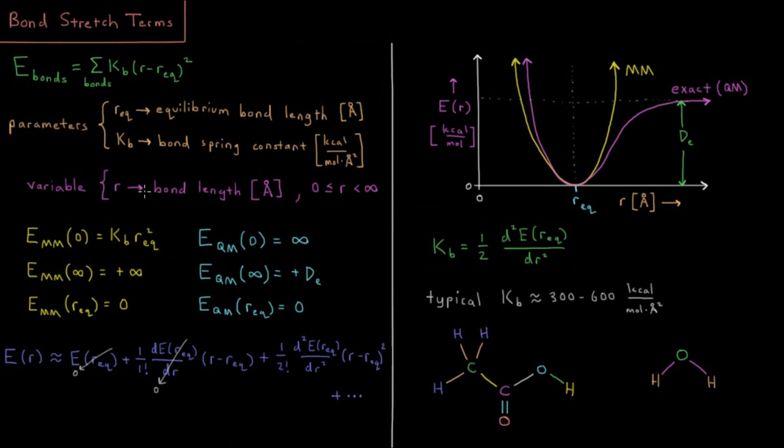Our variable is R, which is the bond length which you would measure in Angstroms, which will be some value between 0 and infinity, and you would compute that according to our video on bond lengths back in the previous chapter.